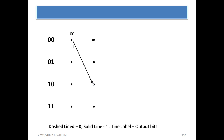This arrow shows the next state. Again, this shows the output when the input is 0, and 11 shows the output when the input is 1. This arrow shows the next state from the present state. Now if the present state is 01 and the input is 0, then the next state will be 00 and the output will be 11.